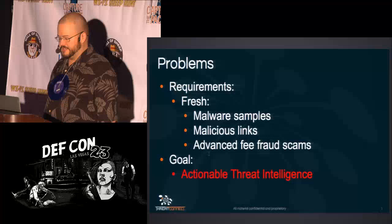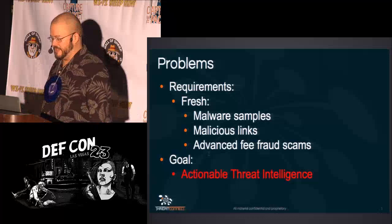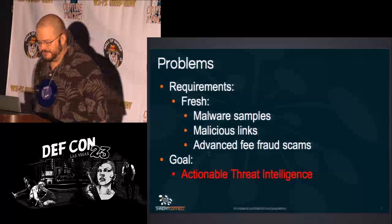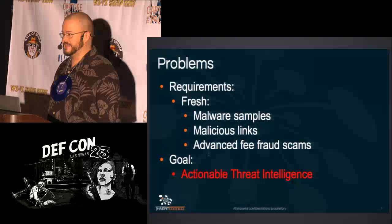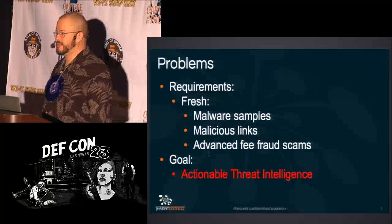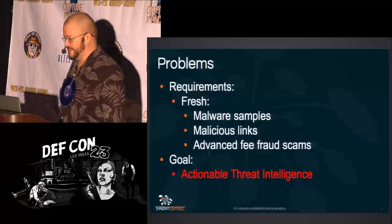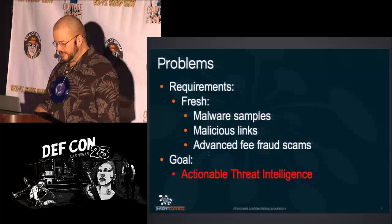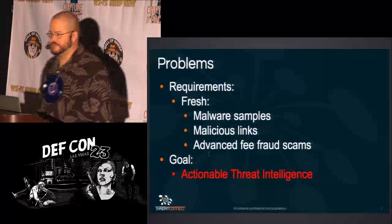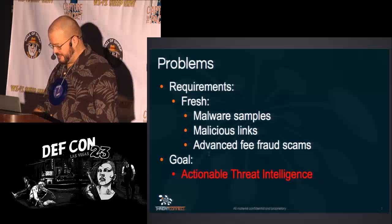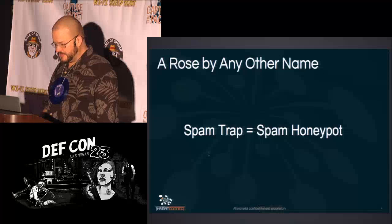So why are we doing this? My requirements are that I need fresh malware samples, fresh malicious links, and fresh advanced fee fraud scams — those are the Nigerian prince scams where he needs you to send him $50 or $100 before you get your million dollars, also known as 419 scams. The goal in all of this is to get actionable threat intelligence: IOCs, IP addresses, spamming nodes.